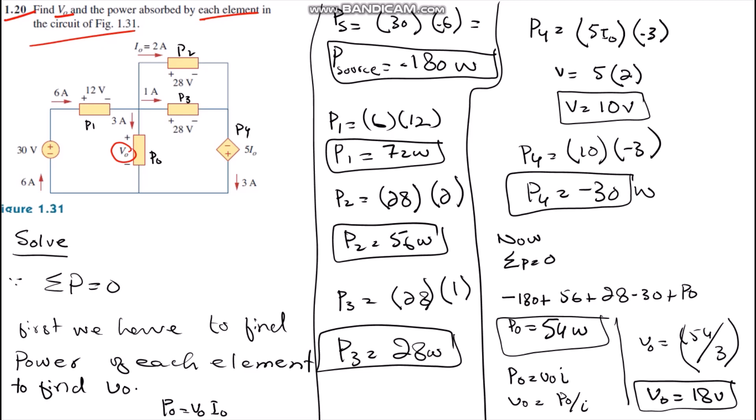We know that the summation of all powers in any circuit equals zero. Therefore, we have to find the power of each element first. P source equals 30 volts with entering current negative 6, so we get minus 180 watts.